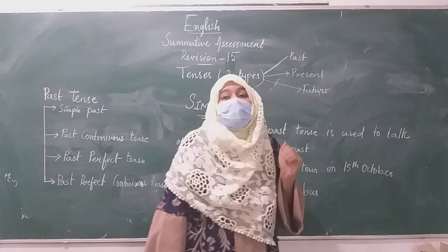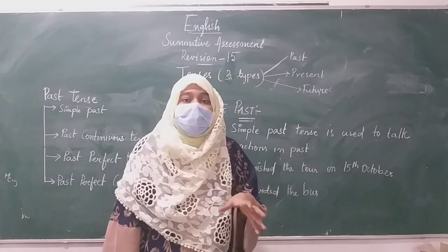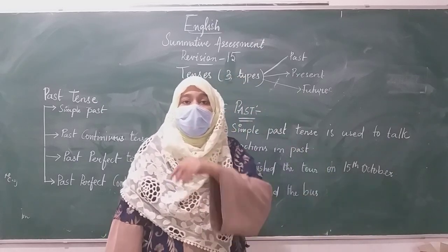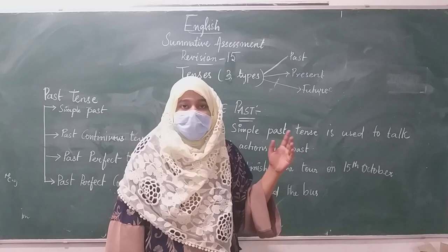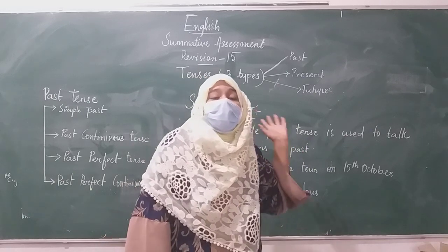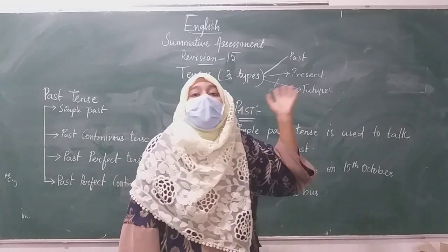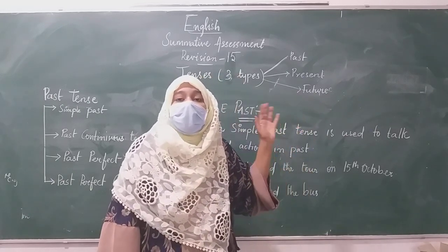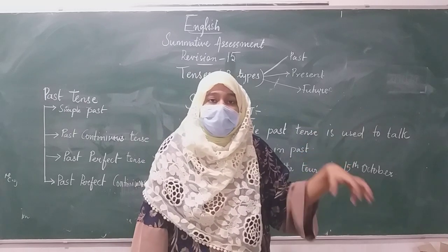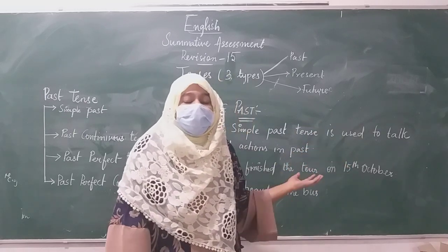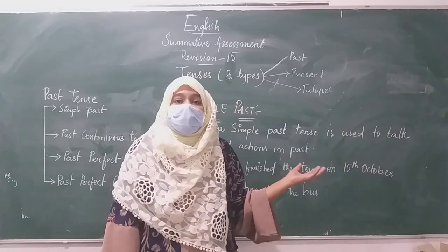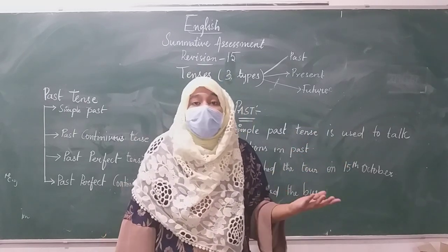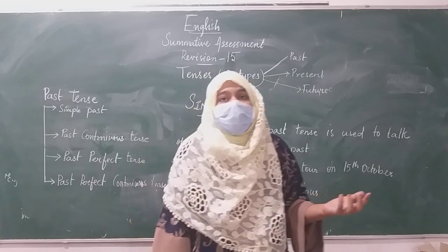What is past tense? Past tense talks about the things that have been done in the past — that has been already done. Present tense talks about the things that you are doing in the present. Future tense talks about the things that you are going to do in the future.